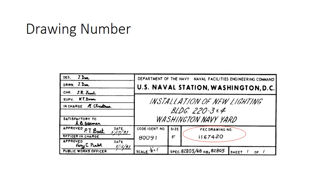Here's where a drawing number would be — right down there in the corner. Different organizations have different drawing numbering systems, but it tells you what it is. In today's age, everything's on a computer, so if you need to find something, you can track it down.